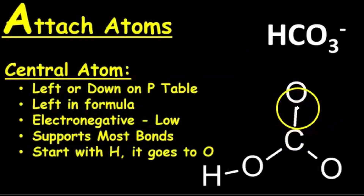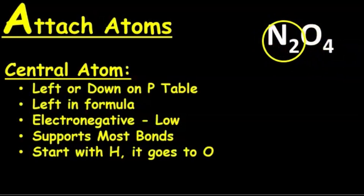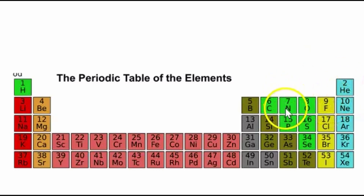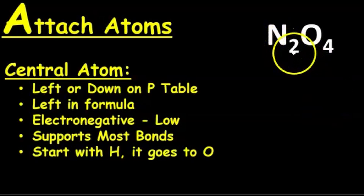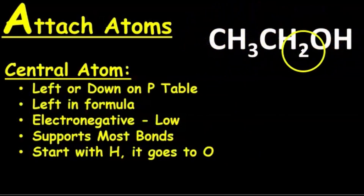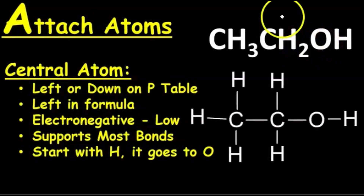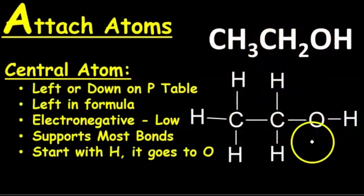We connect atoms with lines, and each line represents two electrons — you can use two dots as well instead of a line. In some cases, we don't have a single central atom; we have two central atoms, like nitrogen and oxygen. On the periodic table, nitrogen is further to the left than oxygen, so nitrogen is the central atom. But since there are two of them, it's like they're both central atoms, bonded together with two oxygens on each nitrogen. When the formula is written like a chain, you just connect the atoms as you see them, with each carbon serving as its own central atom.